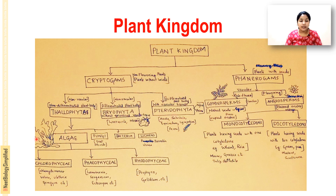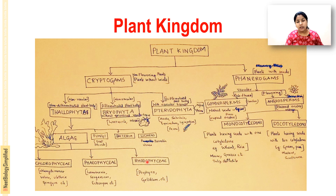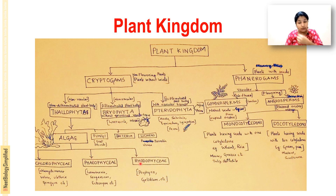Algae are further divided into Chlorophyceae, Phaeophyceae, and Rhodophyceae. Chlorophyceae are the green algae — examples include Chlamydomonas, Volvox, Ulothrix, and Spirogyra. Phaeophyceae are the brown algae — examples include Laminaria, Sargassum, and Ectocarpus. Rhodophyceae are the red algae — examples include Porphyra and Gelidium.